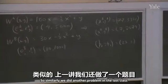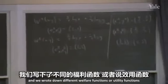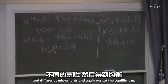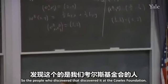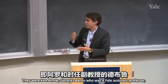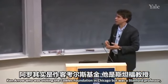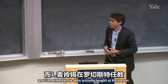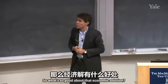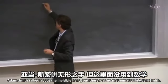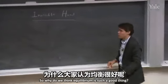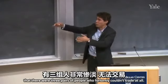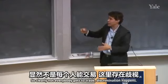Similarly we did another problem in the last class with different welfare functions and different endowments, and again we got the equilibrium. One of the amazing things is that these systems of equations — the six equations for each economy that you solved in class — always have a solution. The people who discovered that were Ken Arrow, Gerard Debreu who was a Yale assistant professor, Ken Arrow who was visiting the Cowles Foundation in Chicago but was a Stanford professor, and Lionel McKenzie who taught at Rochester. The economic equations always have a solution. So what's so good about that economic solution?